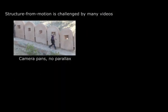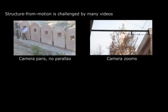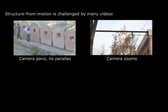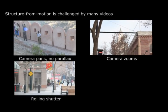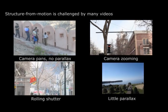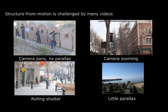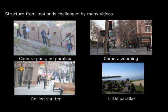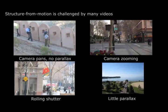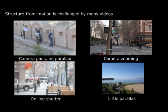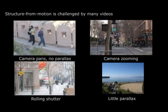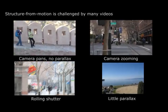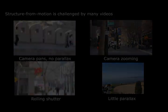A problem with these methods, however, is that they begin by performing structure from motion to create a 3D model of the scene. Structure from motion is a slow, heavyweight algorithm that is challenged by many common properties of video, such as a lack of parallax, camera zooming, or rolling shutter. The implementation we used failed to reconstruct these sequences, for example.